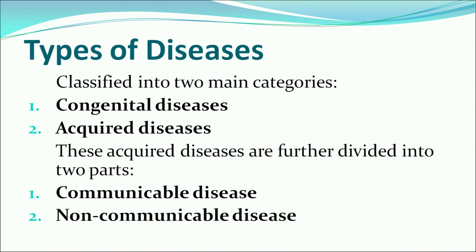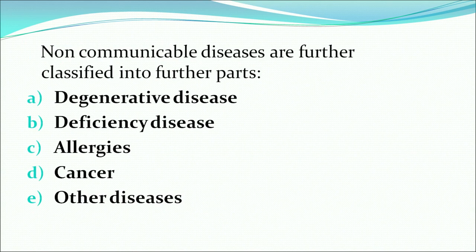Now we come on to the types of diseases. These are basically classified into two main categories. First is congenital disease and the second one is acquired disease. Acquired diseases are further divided into two parts: communicable disease and non-communicable diseases. Non-communicable diseases are further divided into degenerative disease, deficiency disease, allergies, cancer and other specific diseases.